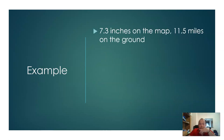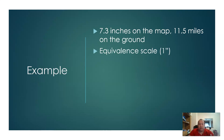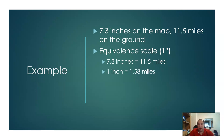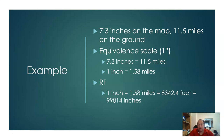Another example: 7.3 inches on the map equals 11.5 miles on the ground. Simplifying gives 1 inch equals 1.58 miles as the equivalent scale. For the representative fraction: 1.58 miles × 5,280 feet/mile × 12 inches/foot gives an RF of approximately 1:99,814.